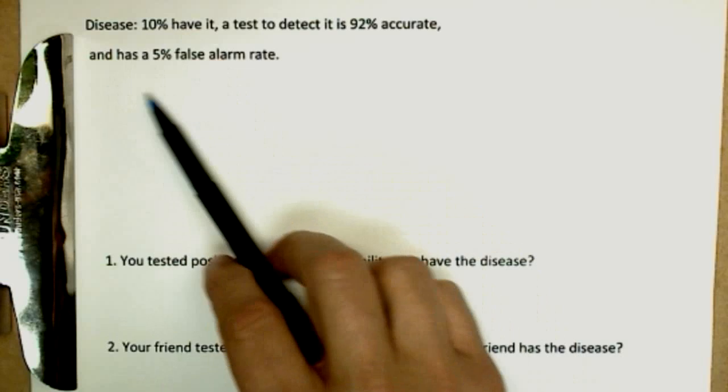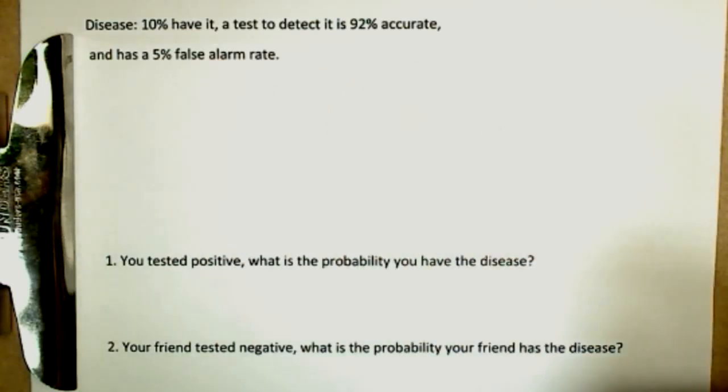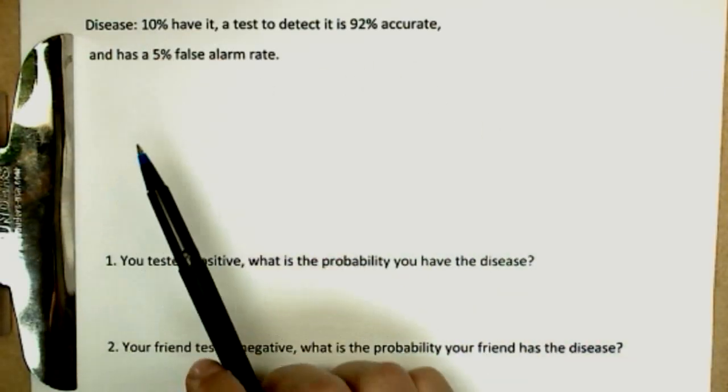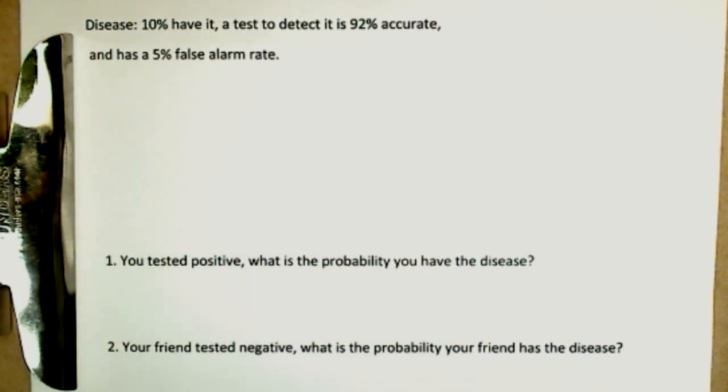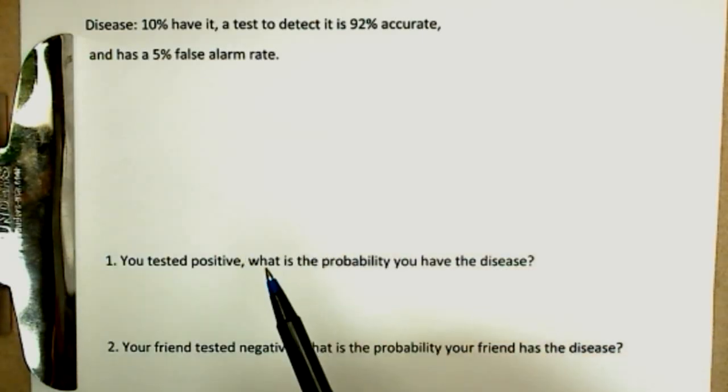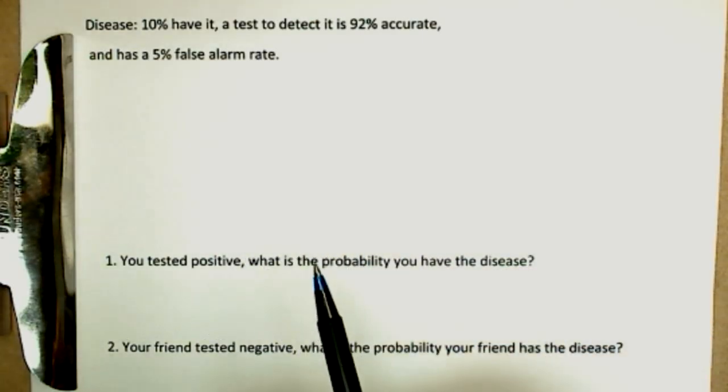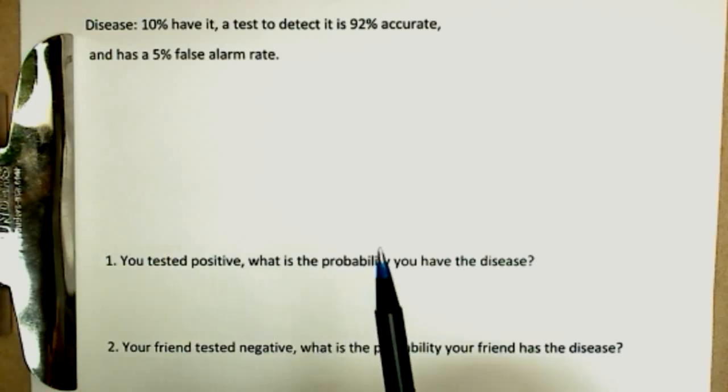In this one, I didn't even tell you a number of people because you don't really need it. You simply need this number here, the 10% have it. And what we have here is a Bayesian probability, but we have to keep our terms very clear. There's two different things that are going on. You can really have the disease, so there's reality. You have the disease or you don't. And you can test as if you have the disease, test positive or test negative.